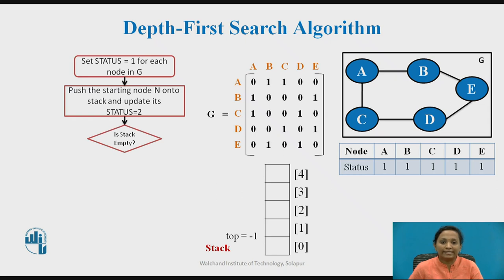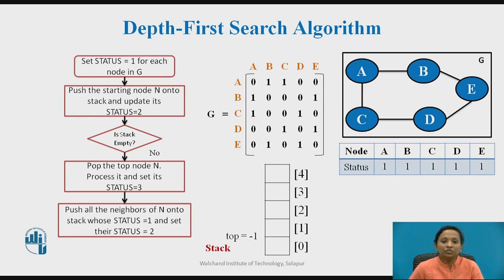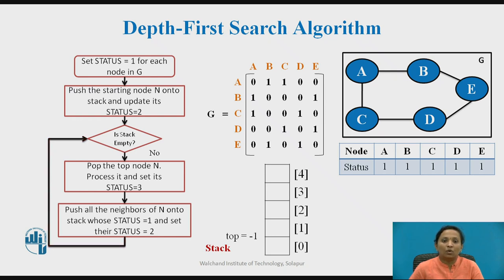Then check if the stack is empty. If the stack is not empty, pop the top node from the stack, process it, and set its status to 3. Then push all neighbouring nodes of the popped node whose status is 1 onto the stack, and set their status to 2. Repeat this step until the stack is empty. Once the stack is empty, stop. This is the overall step sequence of the DFS algorithm.